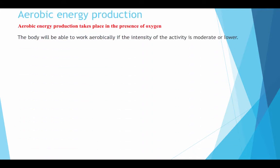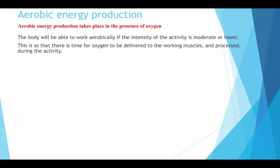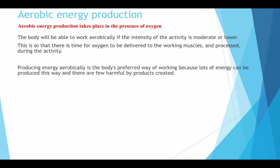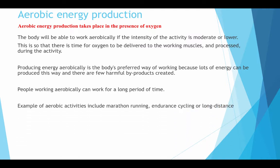Aerobic energy production takes place in the presence of oxygen. The body will be able to work aerobically if the intensity of the activity is moderate or lower. This is so that there is time for oxygen to be delivered to the working muscles and processed during the activity. Producing energy aerobically is the body's preferred way of working, because lots of energy can be produced this way and there are few harmful by-products created. People who work aerobically can work for long periods of time. Examples of aerobic activities include marathon running, endurance cycling, or long distance events.